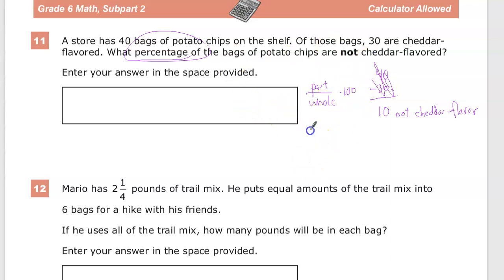So the part was 10. The whole is 40. This is a calculator section. That's what this thing indicates here. So you could do 10 divided by 40 in your calculator if you want. But it's 0.25.